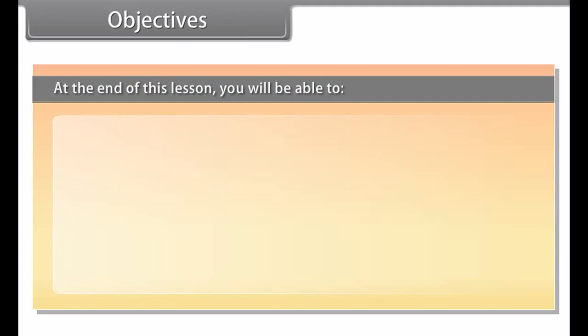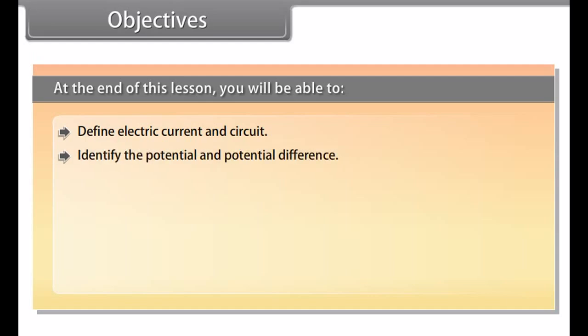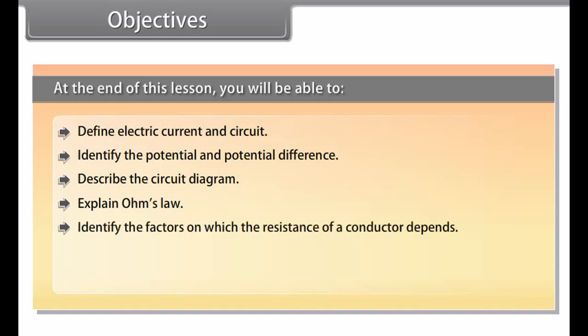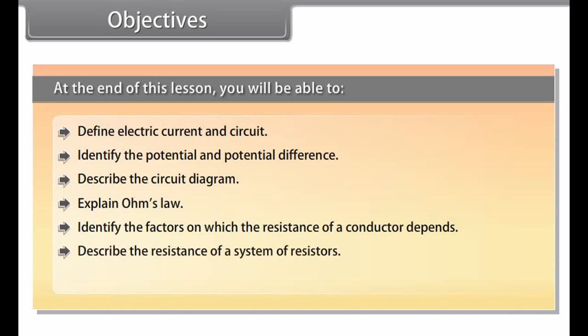At the end of this lesson, you will be able to: define electric current and circuit; identify the potential and potential difference; describe the circuit diagram; explain Ohm's Law; identify the factors on which the resistance of a conductor depends; describe the resistance of a system of resistors; and explain the heating effect of electric current and electric power.